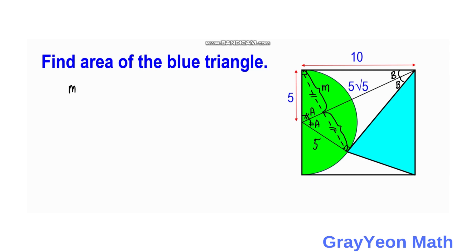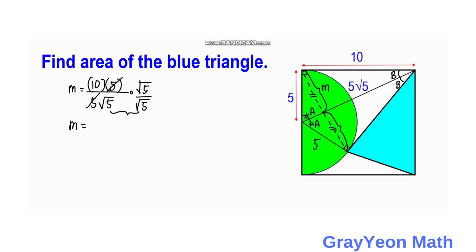M is the altitude on the hypotenuse of the right triangle with legs 5 and 10 and hypotenuse 5 square root of 5. Using the altitude-on-hypotenuse formula: M equals 10 times 5 divided by 5 square root of 5. Canceling the 5 and rationalizing by multiplying by square root of 5 over square root of 5, M equals 2 square root of 5.